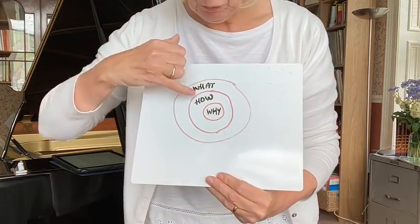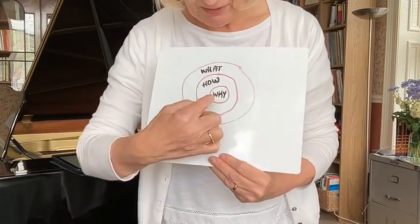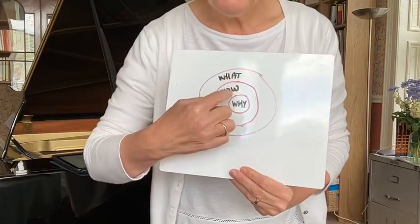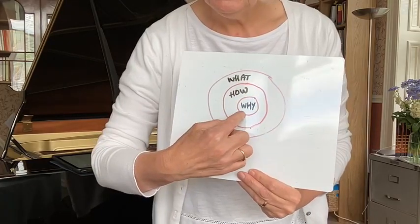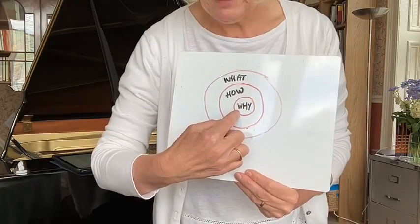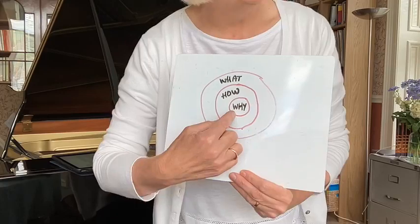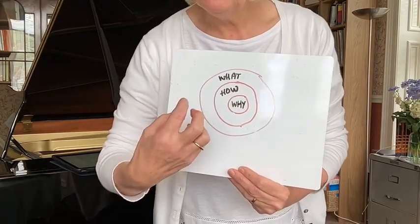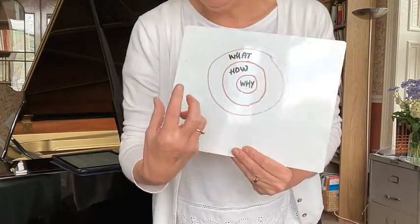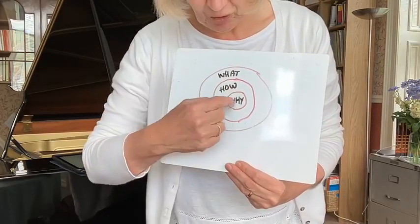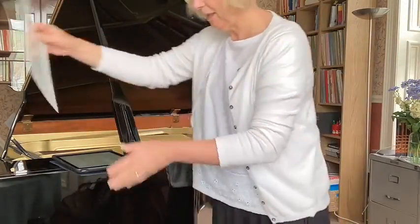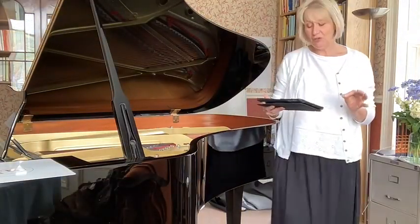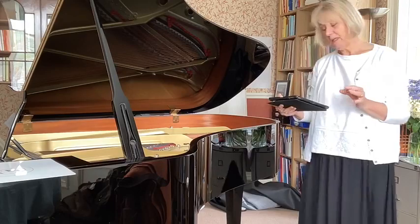Instead of starting with the what and the how and then the why, the place to start is in the middle — work out the why. Then, if people understand why you do it — your beliefs and your values — you can present yourself with a lot more conviction because it's deeply rooted within you. So consider your why as part of the golden circle: why are you teaching the piano?